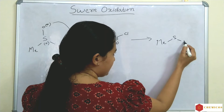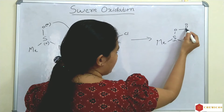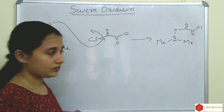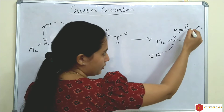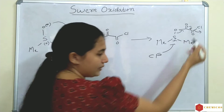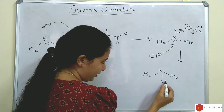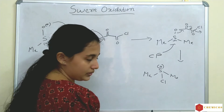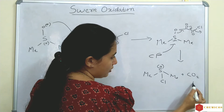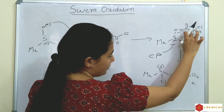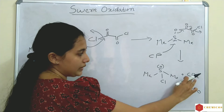The product formed has a positively charged sulfur with oxygen and chlorine attached. The chlorine is eliminated and CO₂ and CO are released as byproducts. So we obtain a positively charged sulfonium compound along with CO₂ and CO.